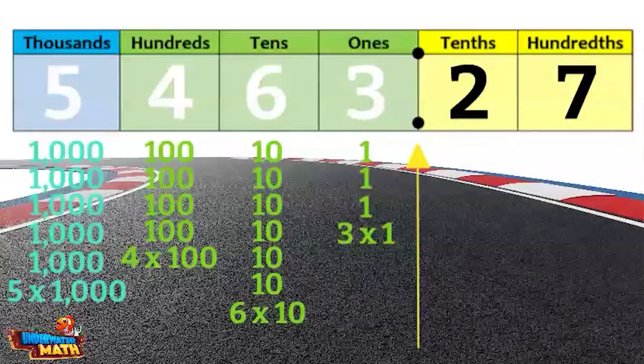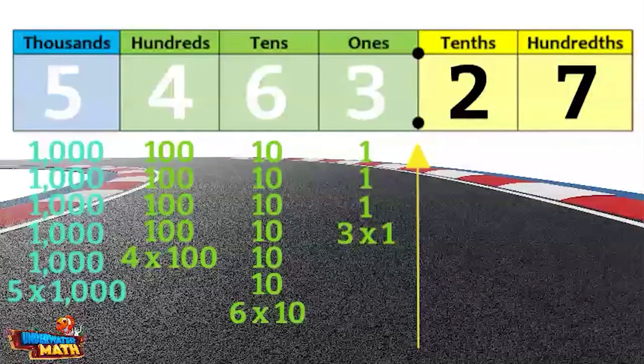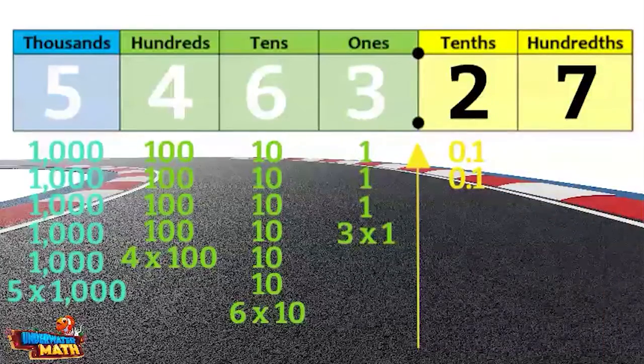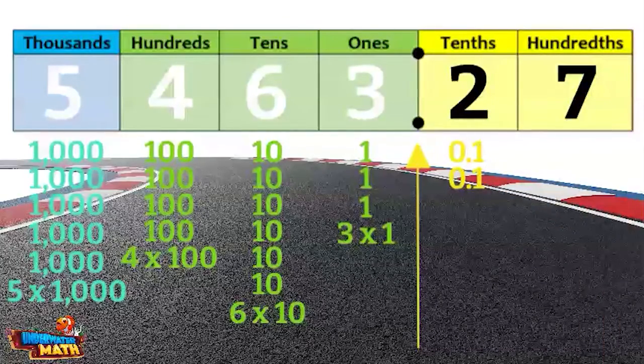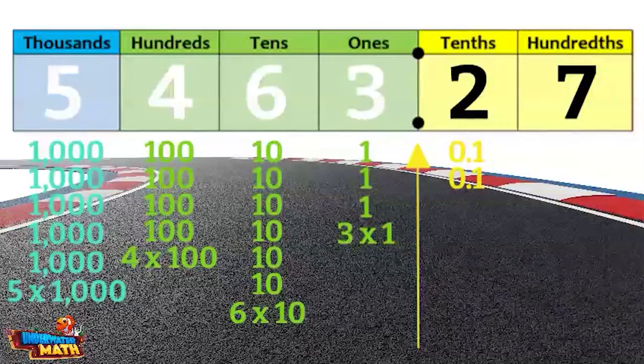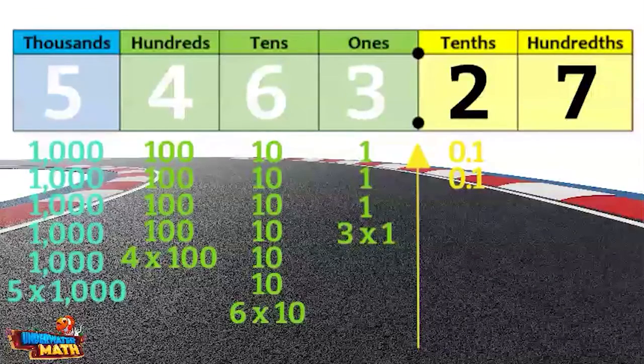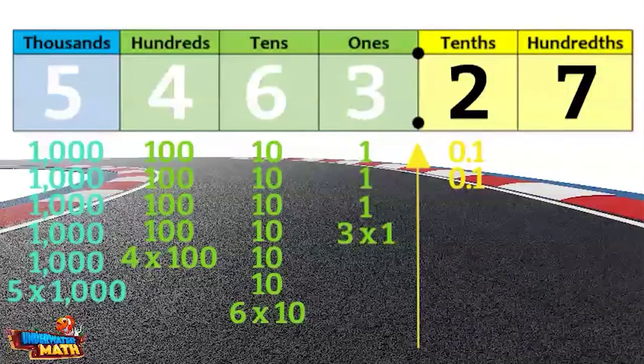There is a 2 in the tenths place. This means we have two tenths. Do you think we can write those two tenths as a product, just like we wrote the values to the left of the decimal point? If you answered yes, you are absolutely correct. We can write two times one tenth.